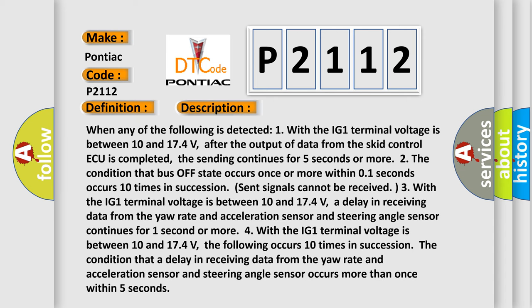When any of the following is detected: One, with the IG1 terminal voltage is between 10 and 17.4 volts, after the output of data from the SCID control ECU is completed, the sending continues for 5 seconds or more.